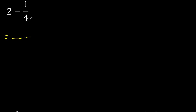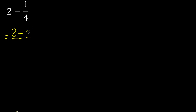First multiply: 4 multiplied by 2 is 8. Then subtract — 8 minus 1 is 7.